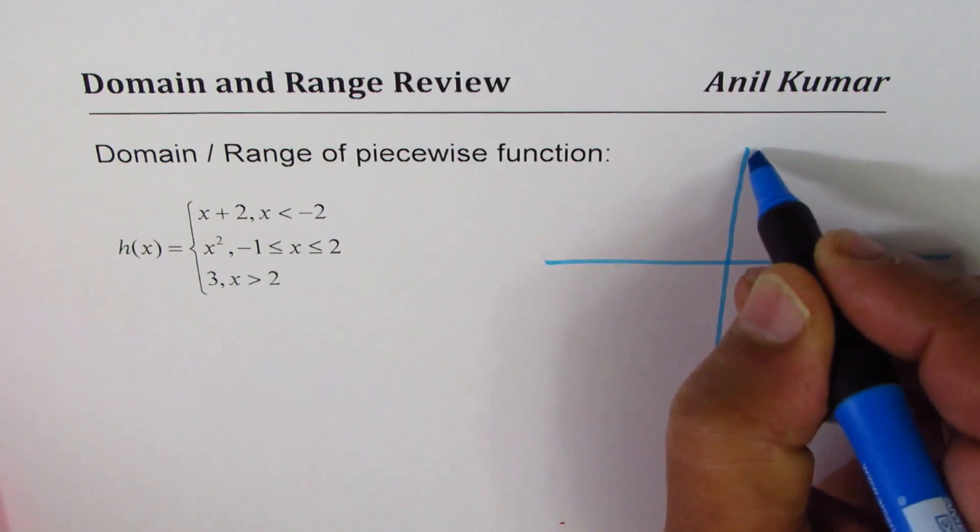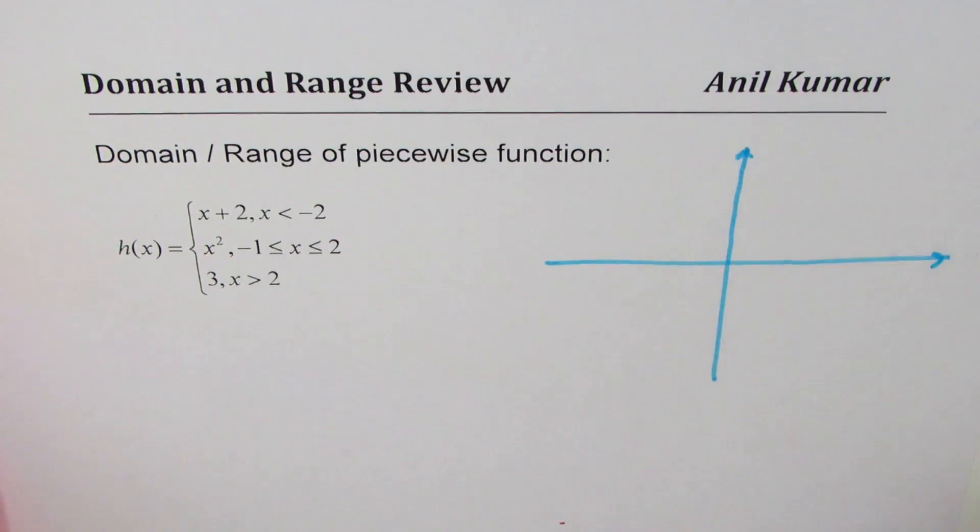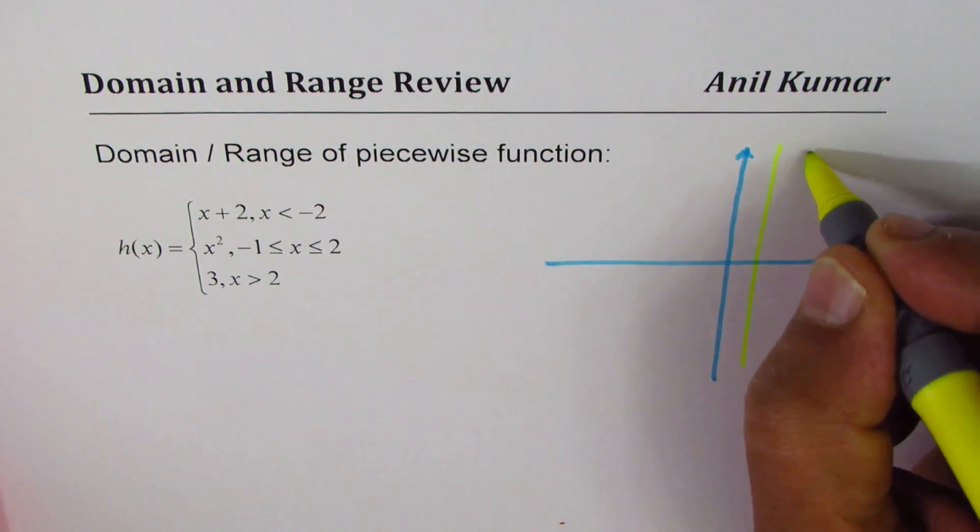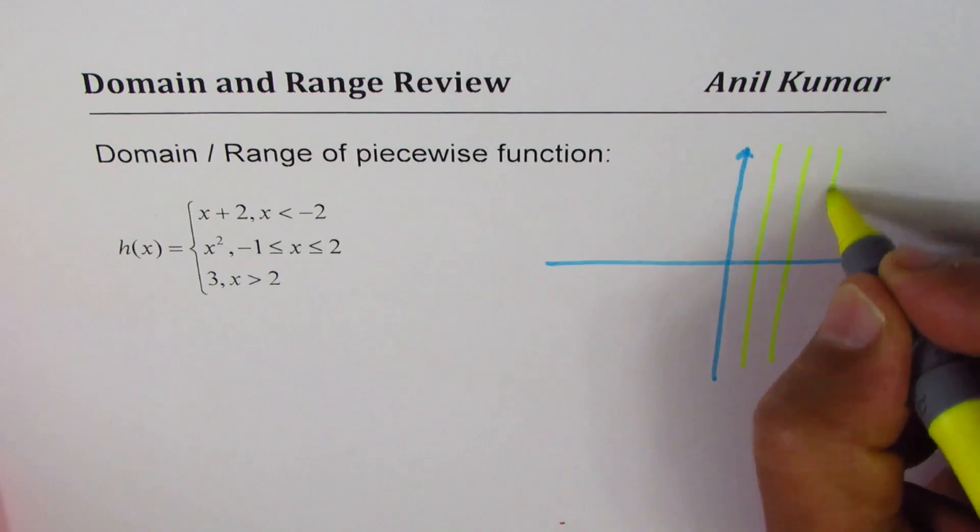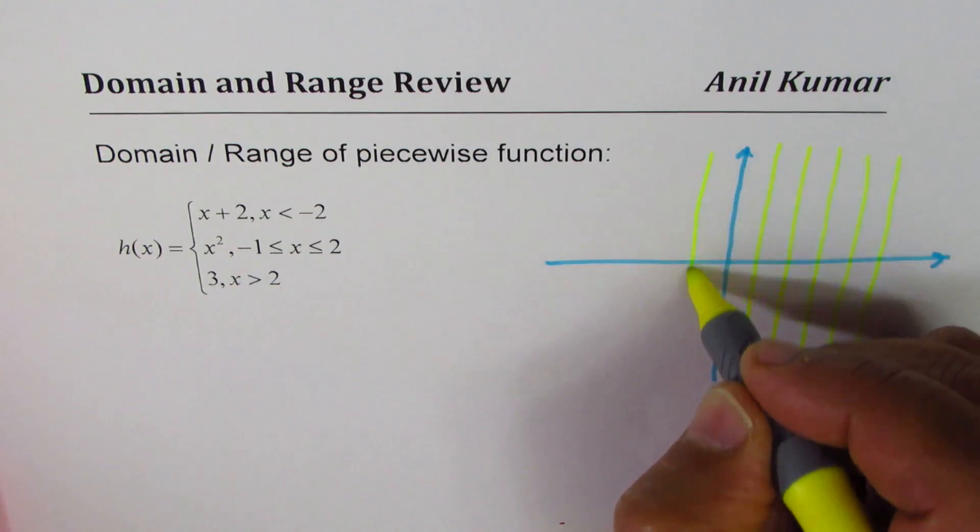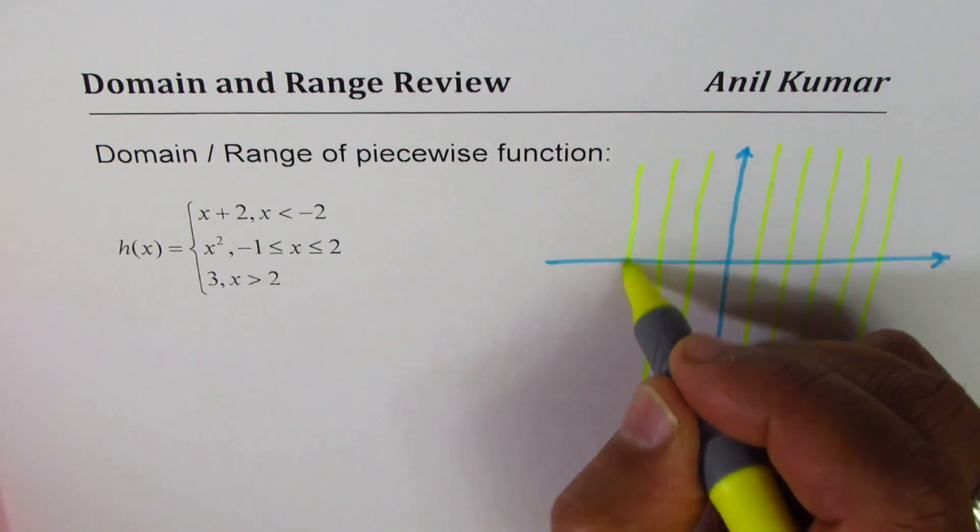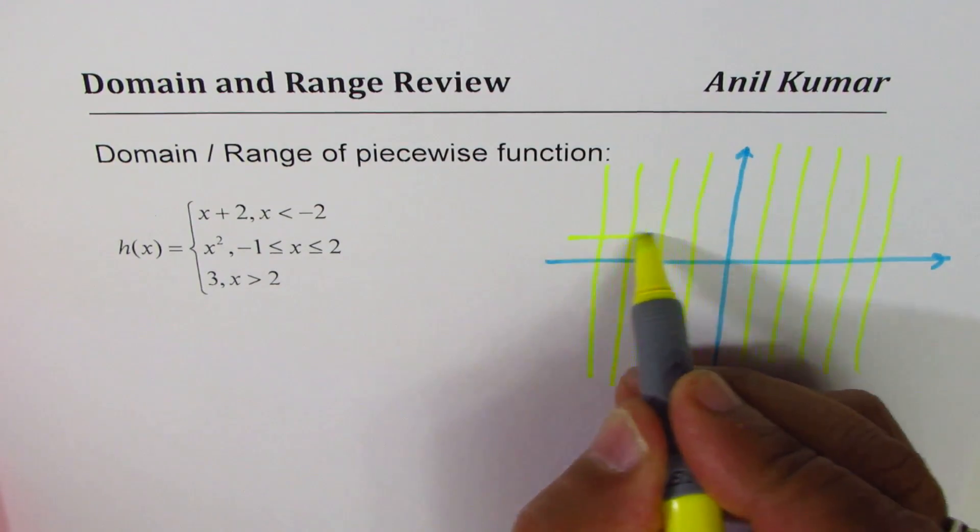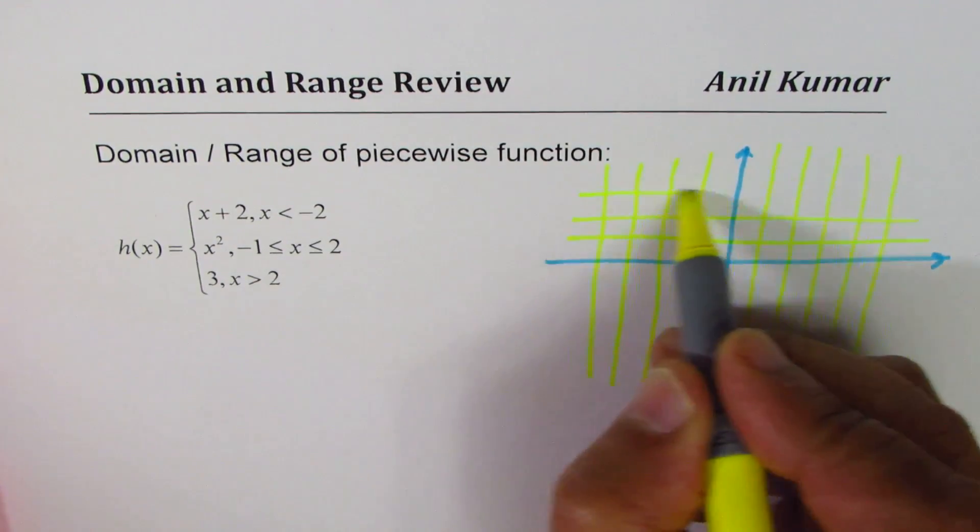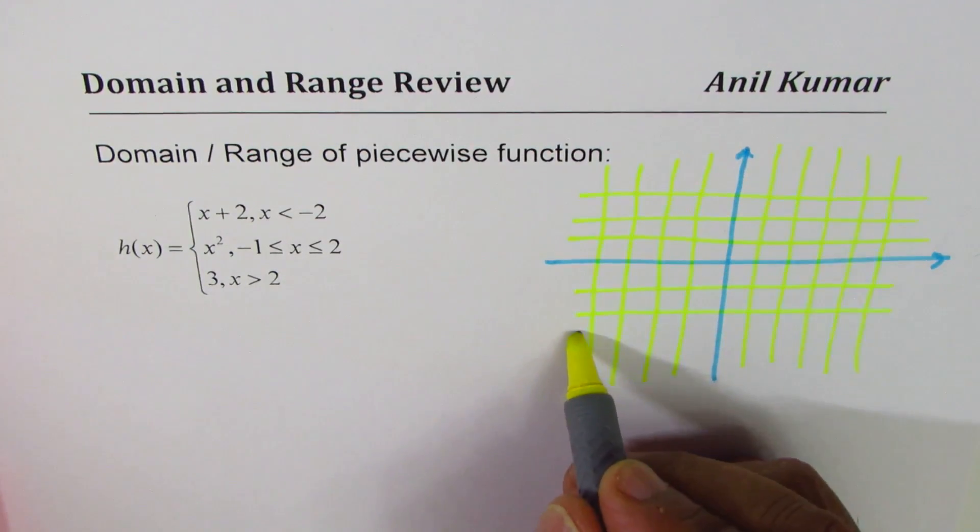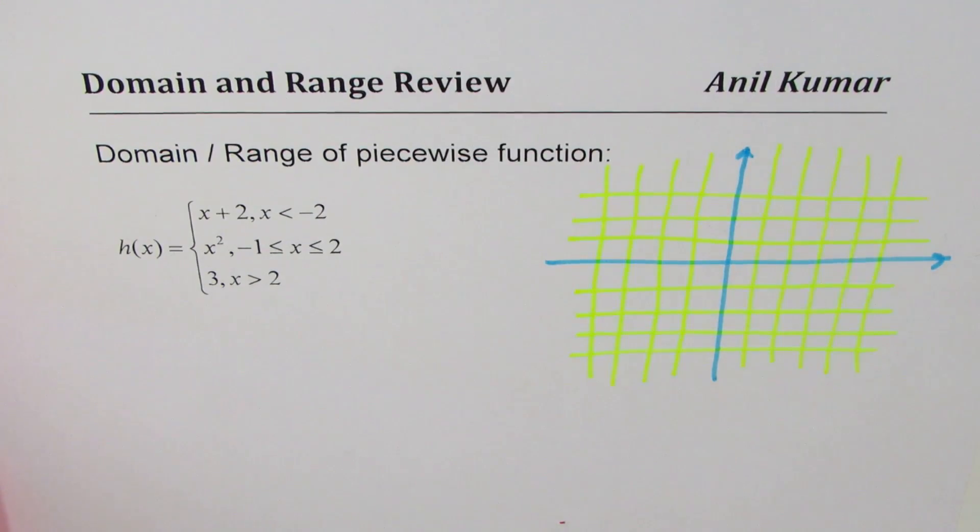I'll make a rough graph here to make you understand the steps involved. So let me just make a grid. Let's say this is one unit apart.